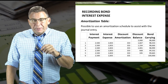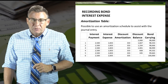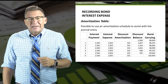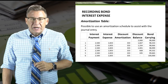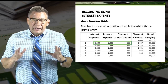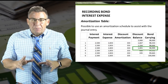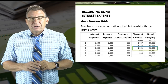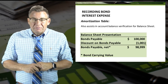Even though the journal entry repeats with the straight-line method, some companies still prepare an amortization schedule. Here you can see the amounts of interest payment, interest expense, discount amortization, the discount balance, and the bond carrying amount. Using the table makes recording the journal entries really easy, and it's also helpful to verify the account balances are correct, like we could do here after interest payment number three. And here is the balance sheet presentation of this example.